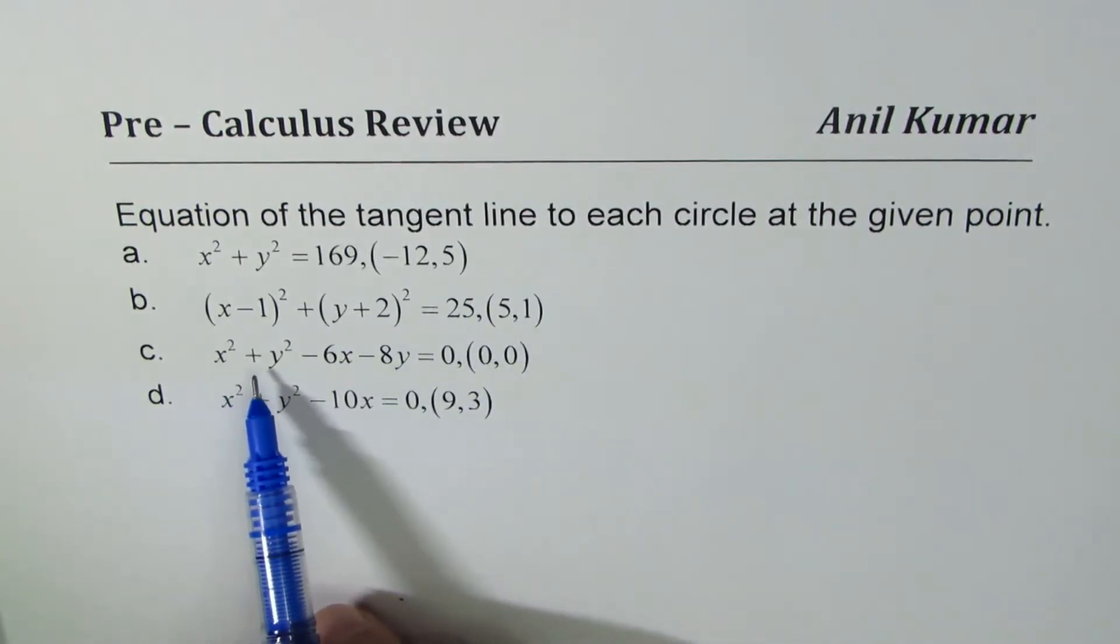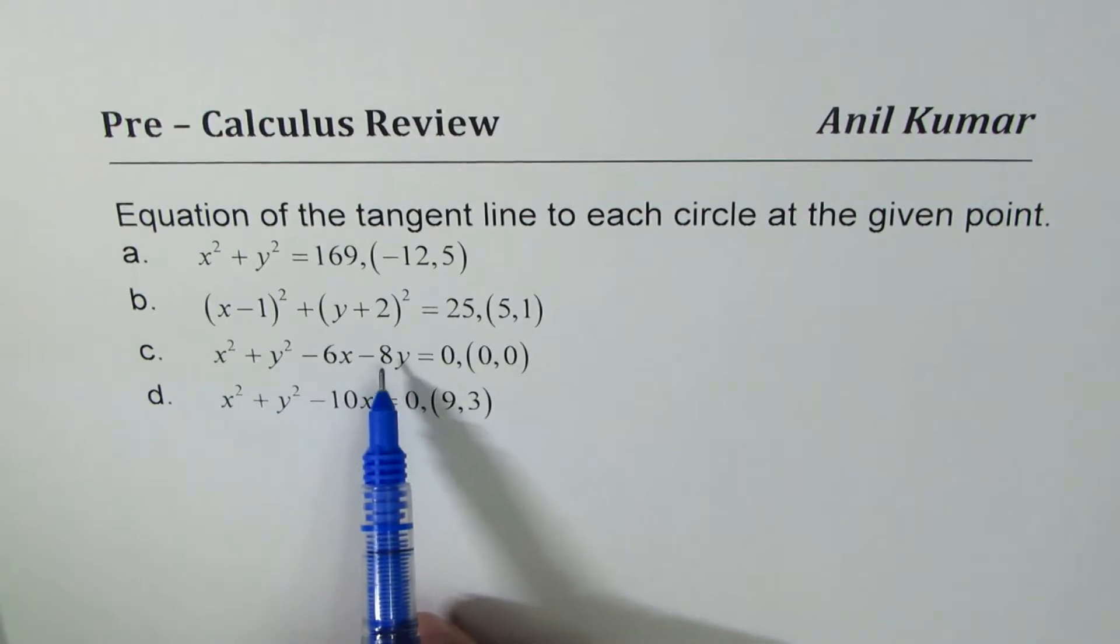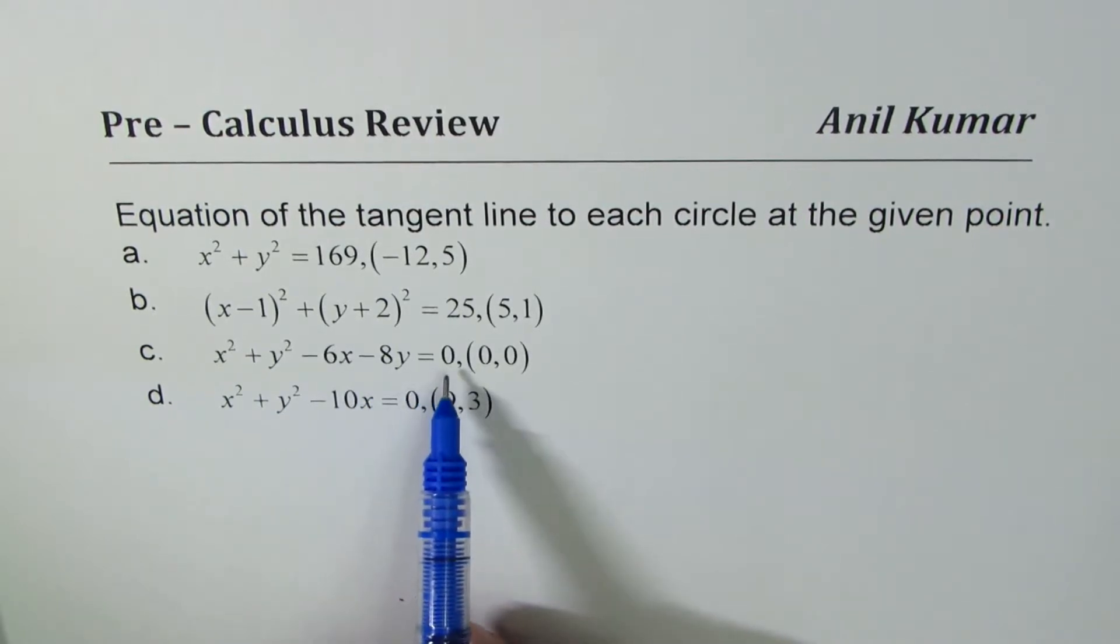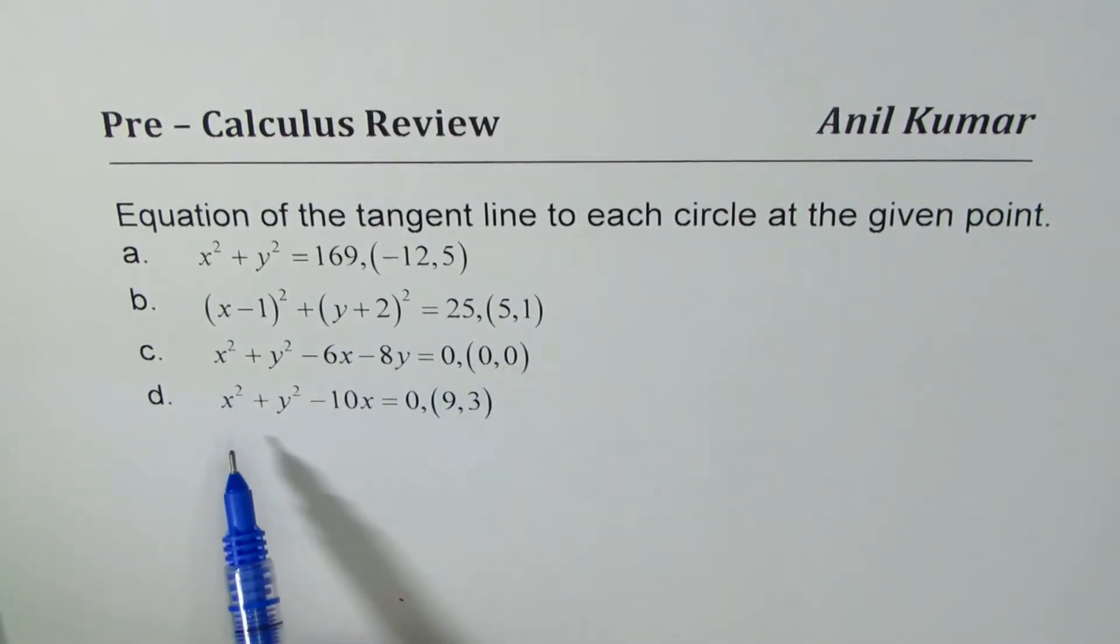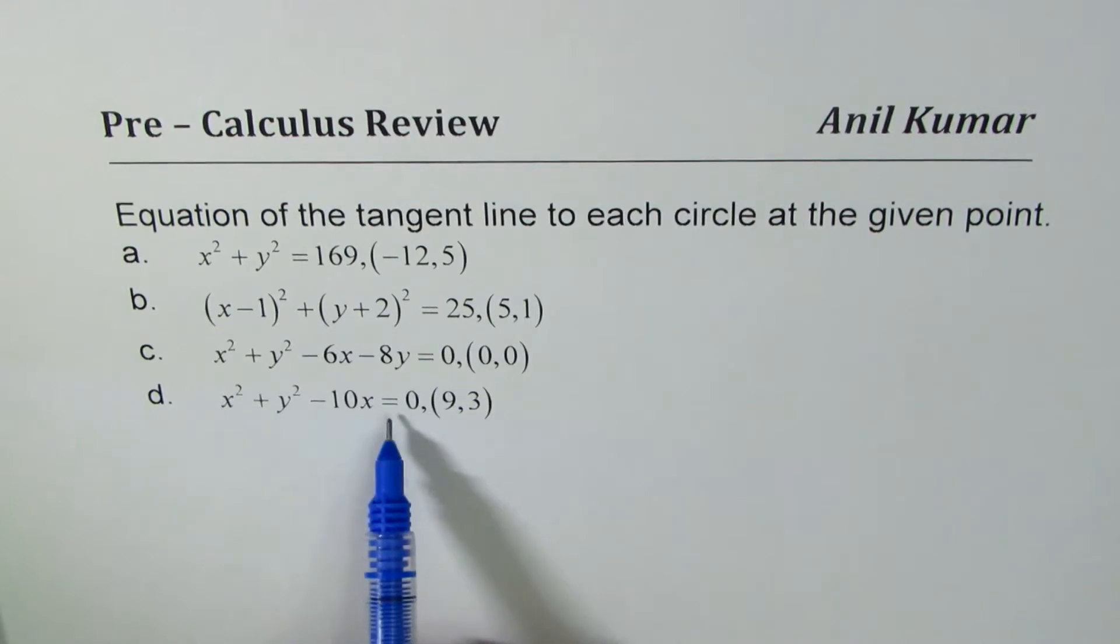Then we have x² + y² - 6x - 8y = 0. You have to find equation of tangent line at (0, 0). And the last one here is x² + y² - 10x = 0, and the point is (9, 3).